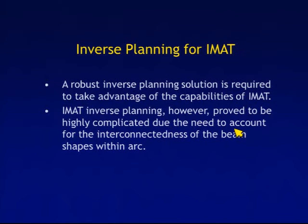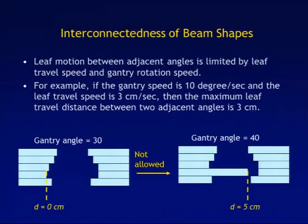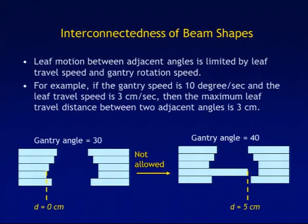One of the key challenges — and one of the reasons IMAT withered on the vine — was the lack of robust inverse planning tools. You need to account for the interconnectedness of the beam shapes within each arc, which proves to be mathematically quite challenging. As you rotate through an arc, each shape is connected to the shape before it and the shape after it, with limitations on how fast the leaves can move. Making too dramatic changes from one angle to the next increases complexity to the point where you may have difficulty getting plans to verify well.